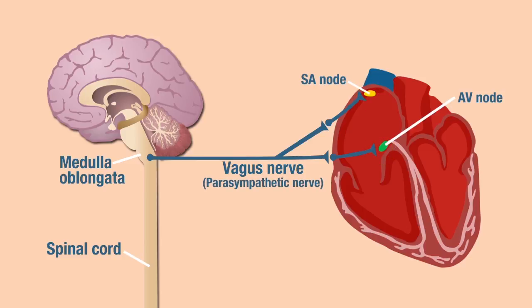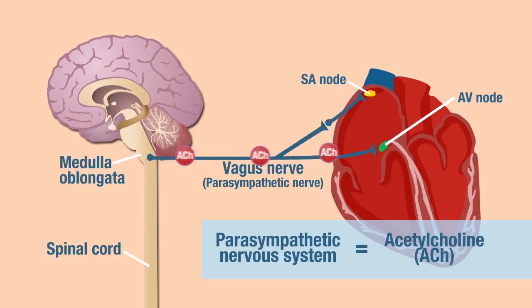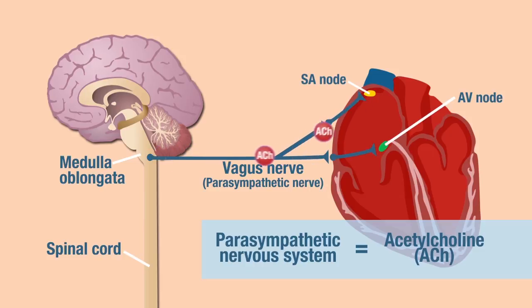When the parasympathetic nervous system predominates, the neurotransmitter that gets released by the vagus nerve is going to be acetylcholine. Always correlate the parasympathetic nervous system with acetylcholine.